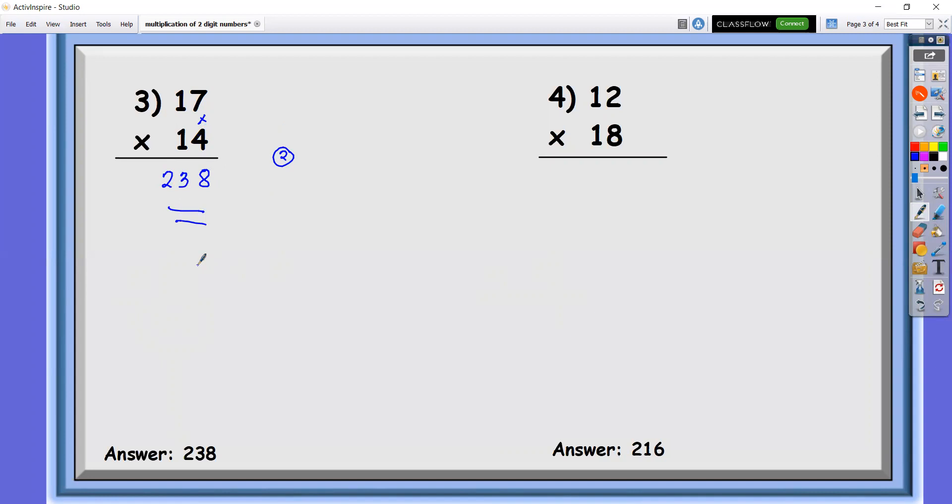And the last number which is number 4, we have 12 times 18. So let's multiply the last digit, so 2 times 8 that is 16, carry 1. 12 plus 8, that is 20, plus 1 we have 21. Therefore we got a product of 216.